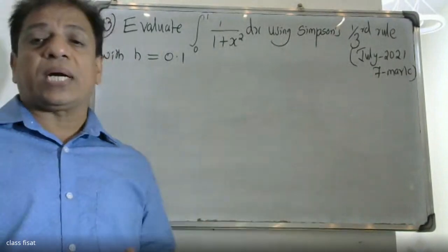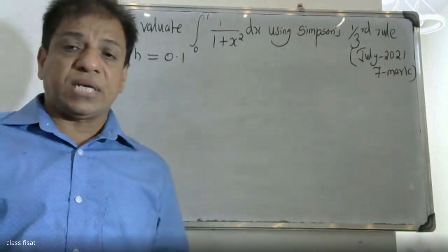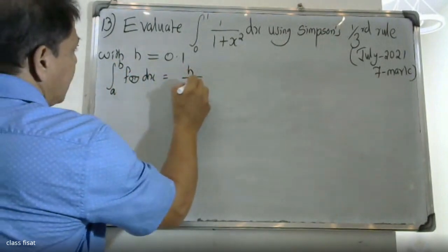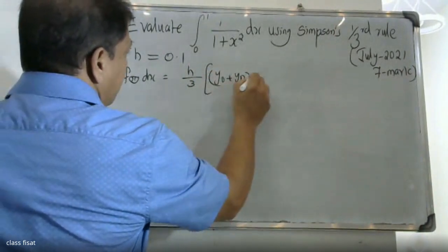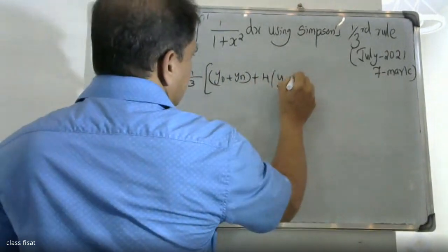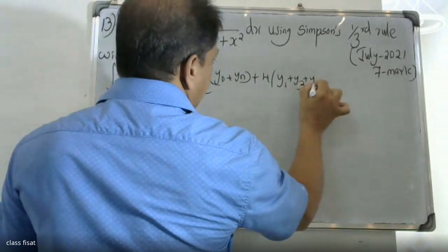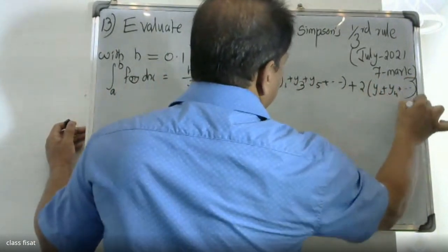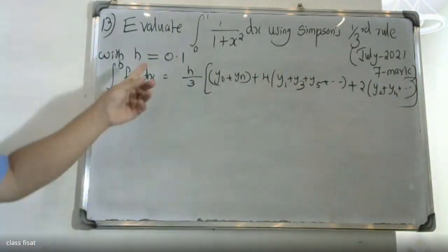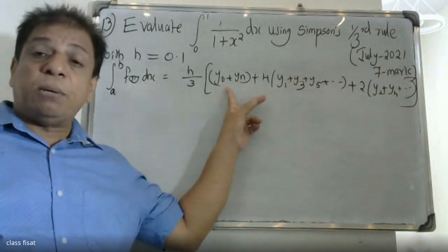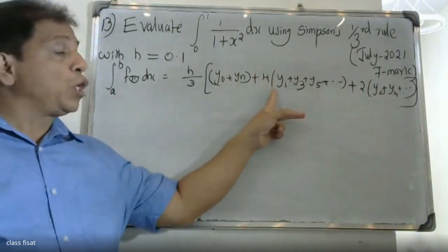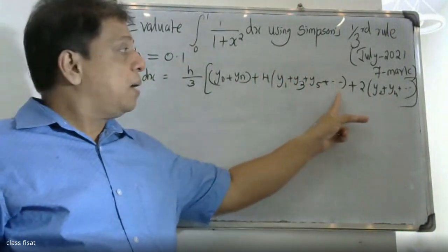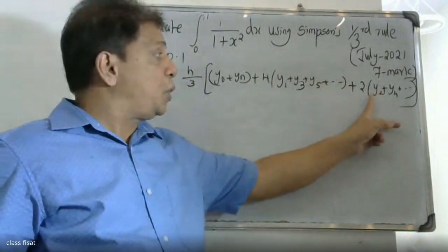The formula we use is Simpson's 1/3 rule. The integral from a to b of f(x) dx equals h/3 times [y0 plus yn, plus 4 into (y1 plus y3 plus y5 plus ...) plus 2 into (y2 plus y4 plus ...)], where odd-indexed terms are multiplied by 4 and remaining even-indexed terms are multiplied by 2.